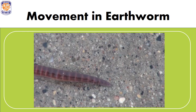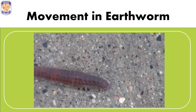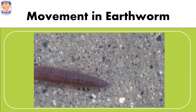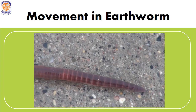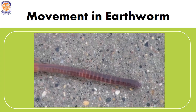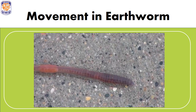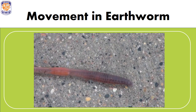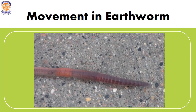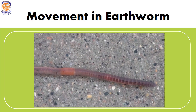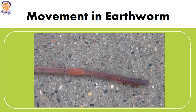For movement, the earthworm first fixes its rear portion onto the ground with the help of its setae and then extends the front part of its body. Then it fixes the front portion to the ground and releases the rear end. This alternate contraction and relaxation of muscles helps the earthworm move very slowly.